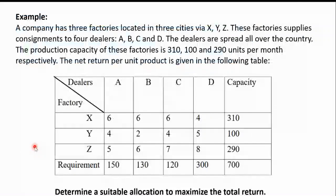For example, we have a company with three factories located in three cities: X, Y, and Z. These factories supply consignments to four dealers A, B, C, and D. The dealers are spread all over the country. The production capacity of these factories is 310, 100, and 290 units per month respectively. The net return per unit product is given in the following table.